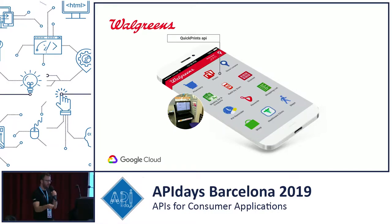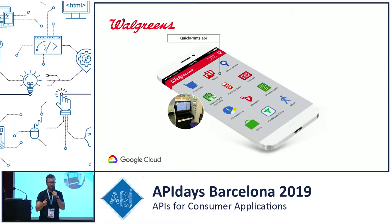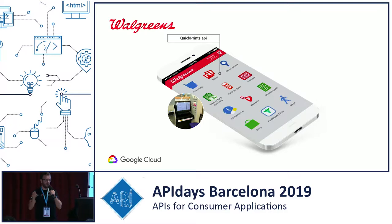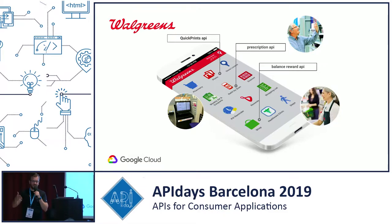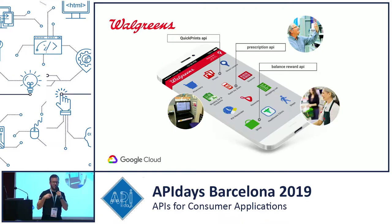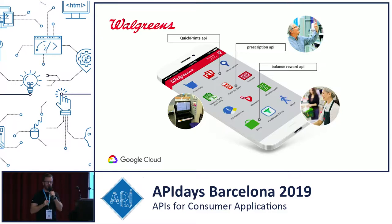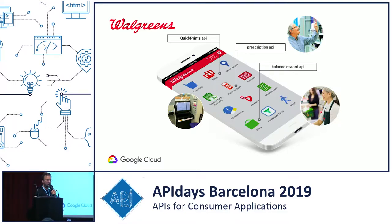They discovered that people going to the store to print their photos were also picking up Diet Coke, chewing gum, milk — and sales increases in stores with Quick Print were higher than the rest. They said, 'that rings a bell, let's build more.' They created the Prescription API, where you can send an MD prescription to Walgreens, the pharmacist schedules a specific collection time, and you can pick up your pills along with some milk or Diet Coke — increasing the store's revenue.